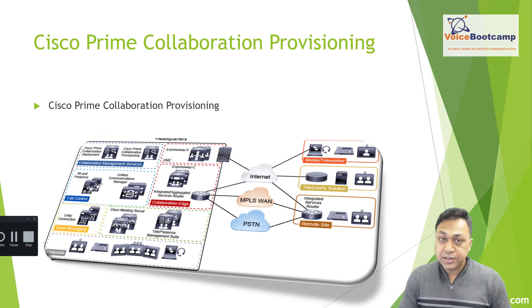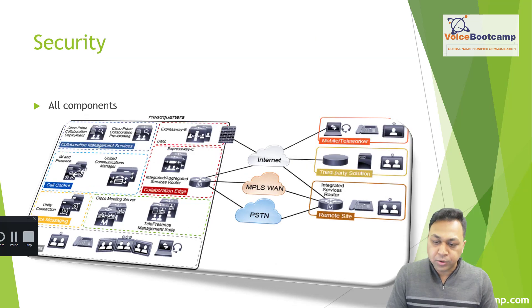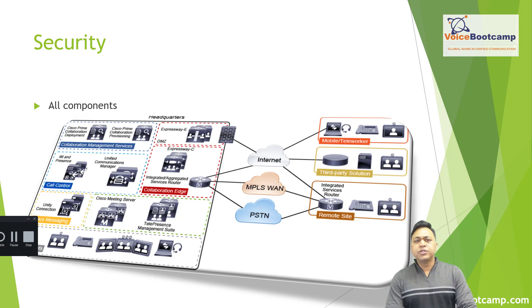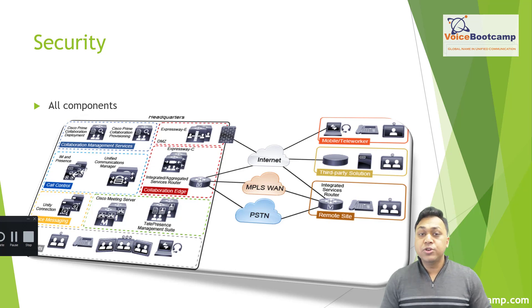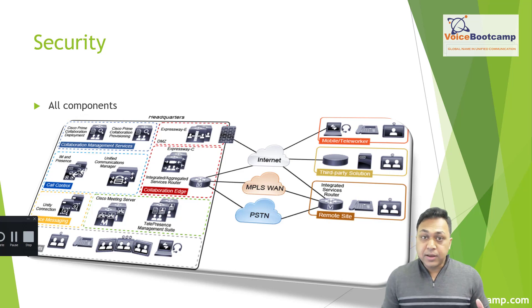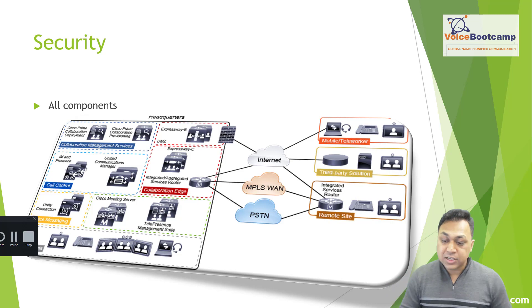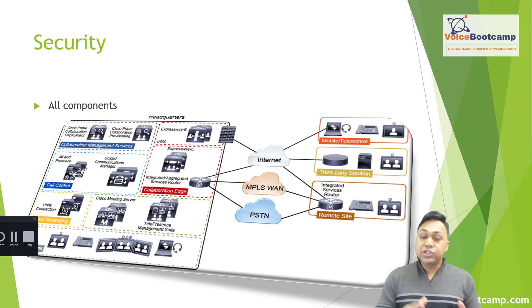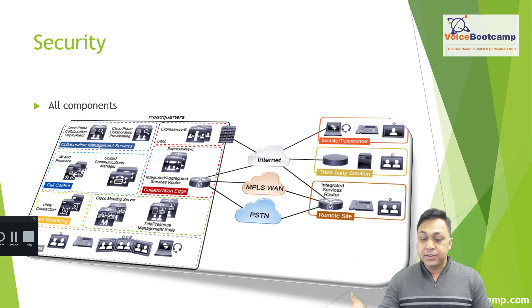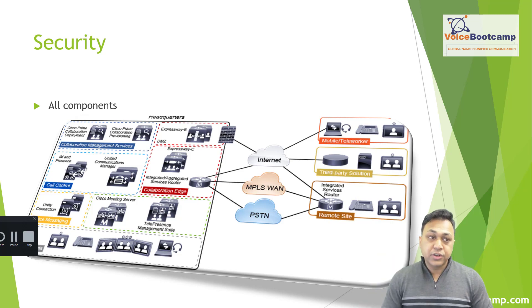Security applies to all components — from the endpoint such as a phone or Jabber, to Call Manager, Unified Communication Manager, Presence, Unity — every device has some security requirement, and it is the most fundamental and important aspect of your collaboration architecture. Security incorporates compliance of security features ranging from features enabled by default to those not enabled by default that you may require based on your specific needs.